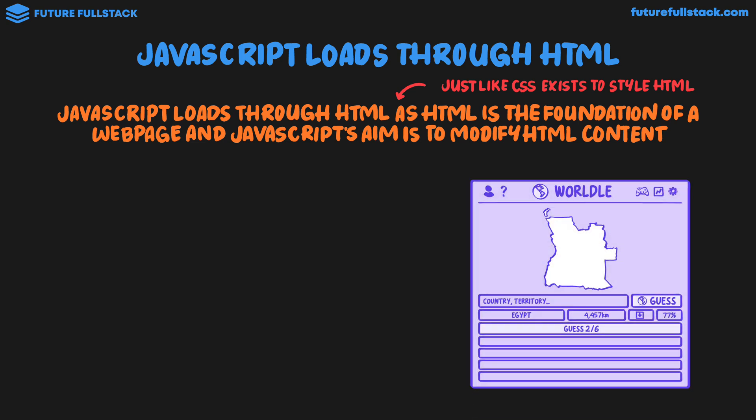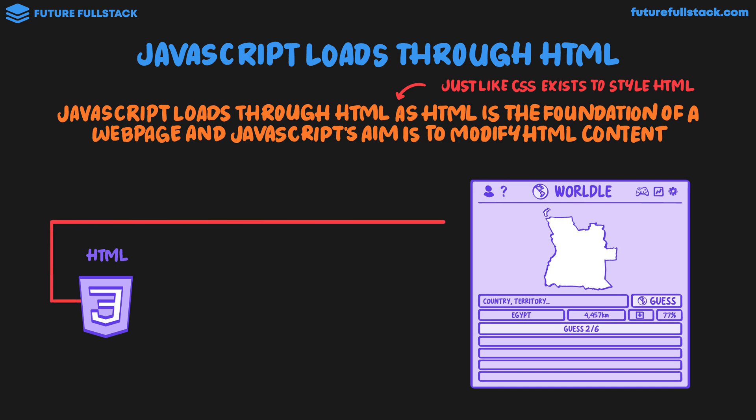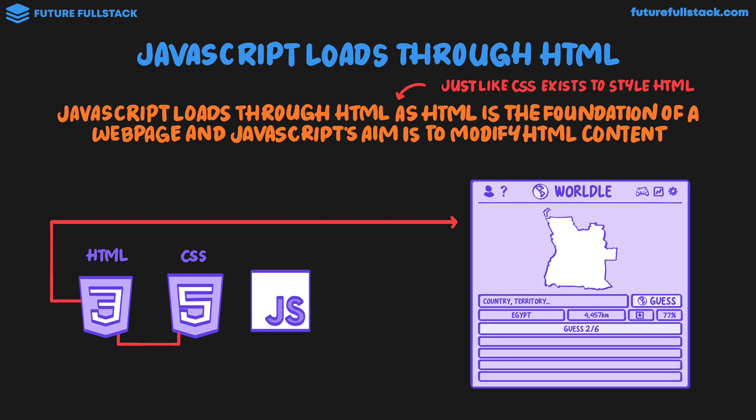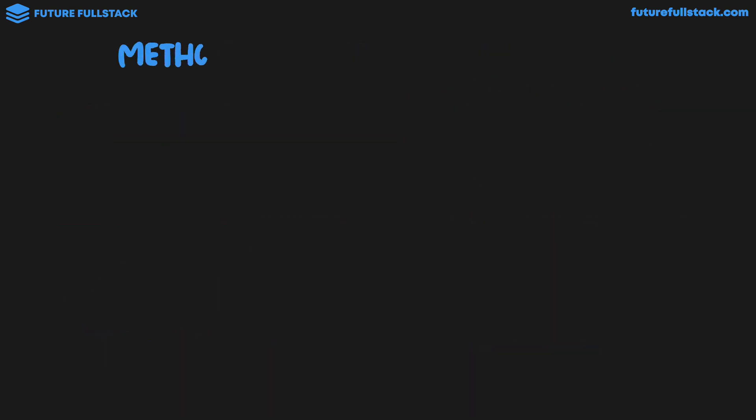We have our Wordle web page and initially HTML will load into the web page. The HTML file is then connected to a CSS file as well as a JavaScript file. JavaScript is a programming language inside the browser, which is slightly different from other programming languages that just load inside their own environment. JavaScript is unique in that to run it, we always have to anchor it to an HTML file.